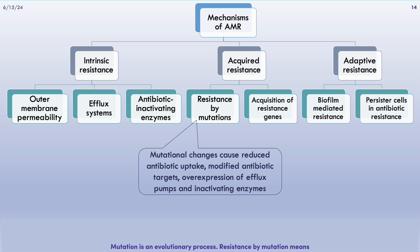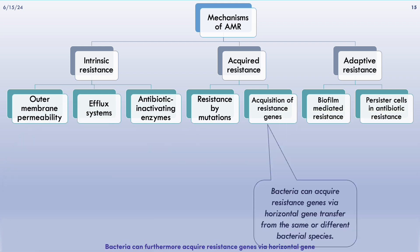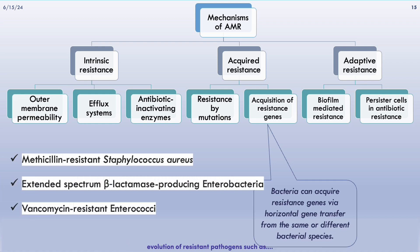Mutation is an evolutionary process. Resistance by mutations means mutational changes cause reduced antibiotic uptake, modified antibiotic targets, or overexpression of efflux pumps and inactivating enzymes. Bacteria can furthermore acquire resistance genes via horizontal gene transfer from the same or different bacterial species. Horizontal gene transfer led to the evolution of resistant pathogens such as methicillin-resistant Staphylococcus aureus (MRSA), extended-spectrum beta-lactamase-producing Enterobacteriaceae, and vancomycin-resistant enterococci.